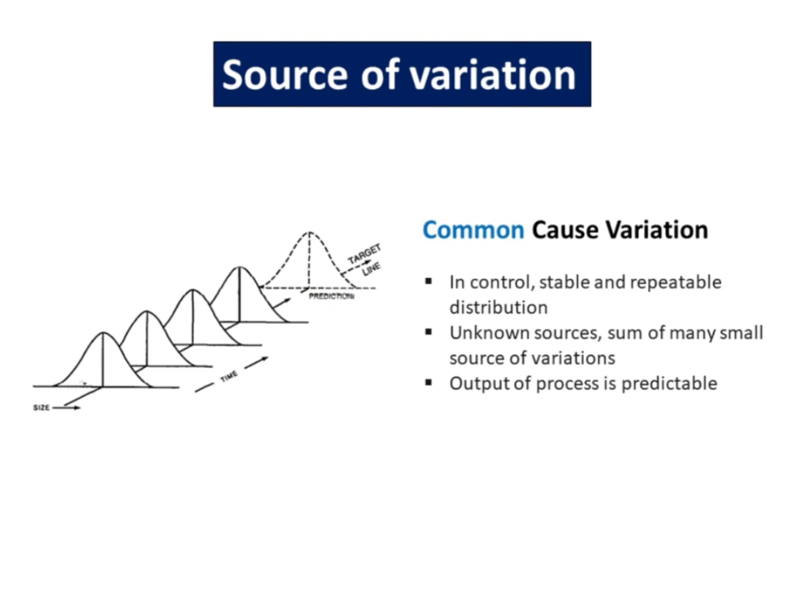Common causes refer to the many sources of variation within a process that has a stable and repeatable distribution over time. This is called in a state of statistical control, or sometimes just in control. Common causes behave like a stable system of chance causes. If only common causes of variation are present and do not change, the output of a process is predictable.